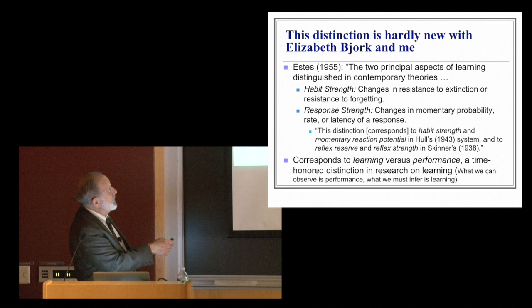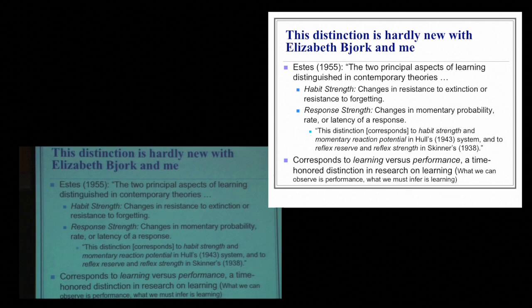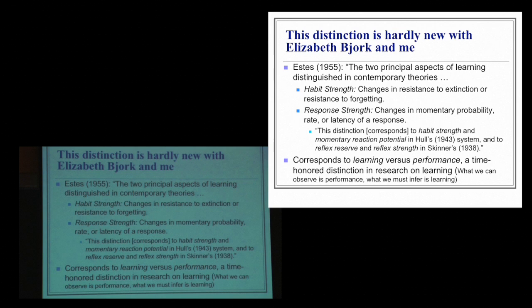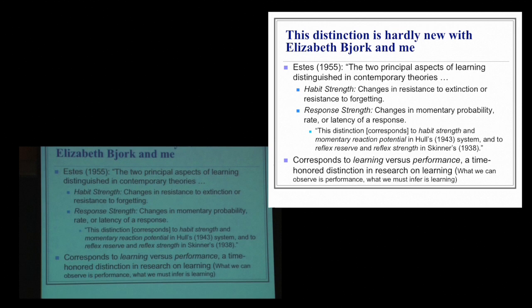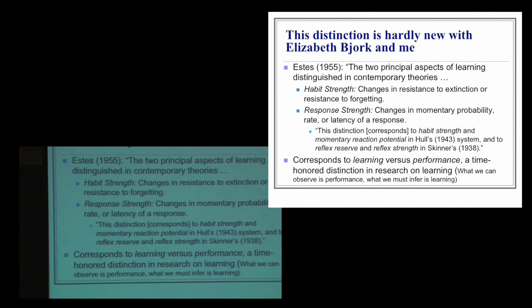Now this distinction is hardly new with the Bjorks. Back in the 50s, Estes even said the two things that everybody had to assume. They couldn't agree about much of anything in learning theories, but they all needed to make some distinction like this. And Hull talked about momentary reaction potential and habit strength. This corresponds to learning versus performance. That's a time-honored distinction in research on learning. And the basic principle is what we can observe and measure one way or another at some time is performance.